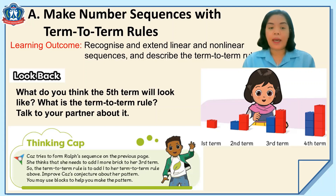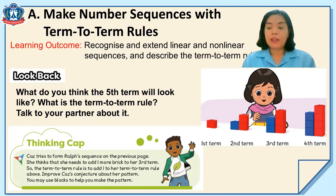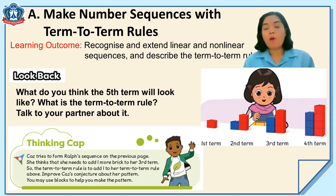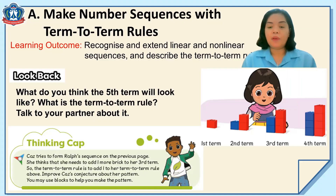Now take a look at our thinking cap. Kaz tries to form a rough sequence of the previous phase. Kaz, the girl, thinks that she needs to add one more brick to her third term. So the term-to-term rule is to add one to her term-to-term rule above. Do you think that's correct? We will discuss more about this lesson as we go on in this video, so stay tuned.